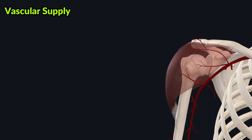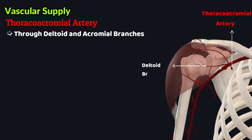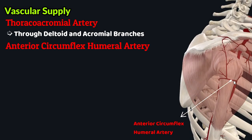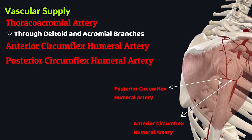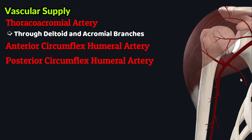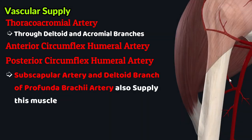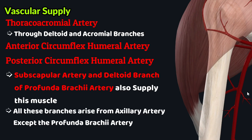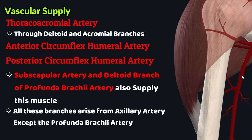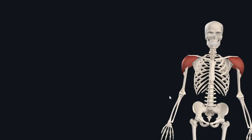In terms of the arterial or vascular supply, the deltoid muscle is supplied by the thoracoacromial artery via its deltoid and acromial branches, and by the anterior and posterior circumflex humeral arteries. Some other arterial branches, such as the subscapular artery and the deltoid branch of the profunda brachial artery, also supply the deltoid muscle. All these arterial branches, except the profunda brachial artery, arise from the axillary artery; the profunda brachial artery arises from the brachial artery.